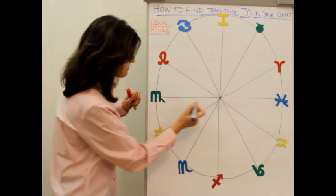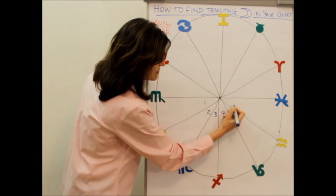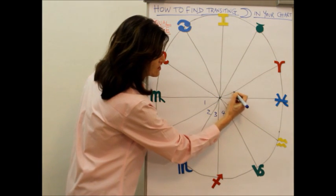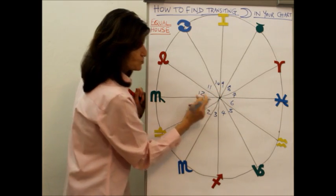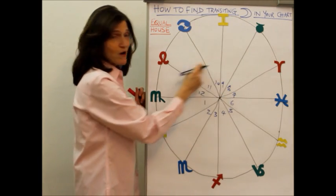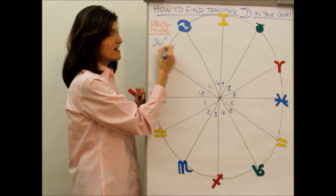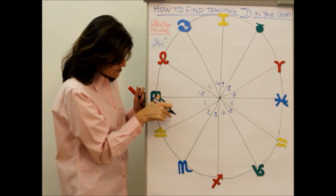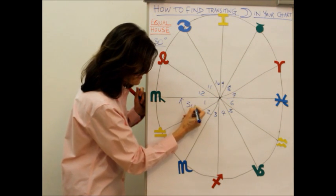The equal house system is really what it says on the tin: it splits every house into the same number of degrees—30 degrees. So we've got 12 segments, 12 houses, each of 30 degrees each.